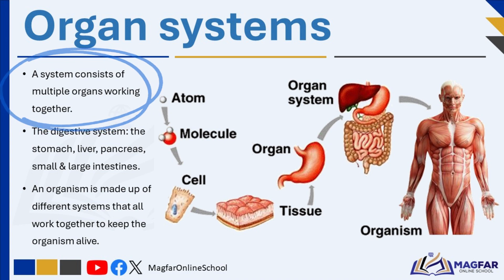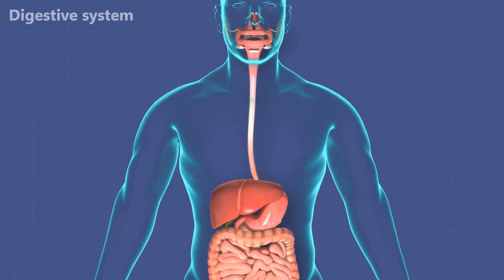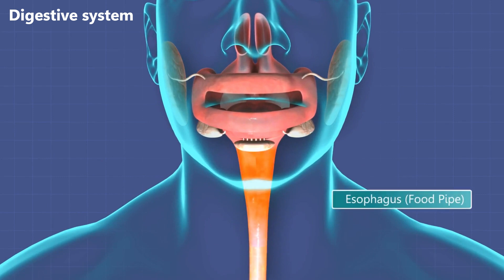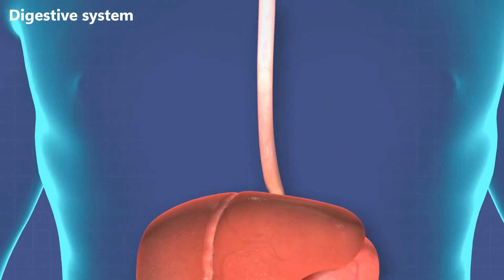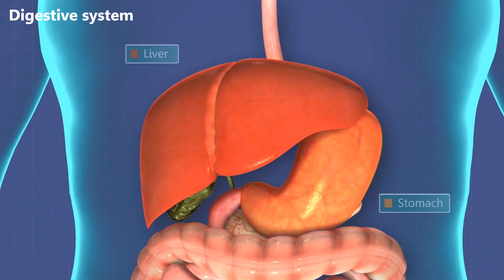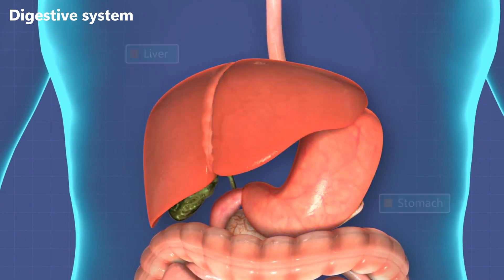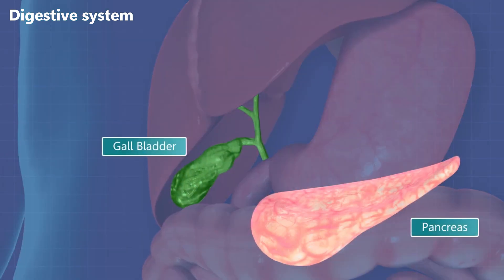For example, the digestive system includes organs such as the stomach, liver, pancreas, small intestine, and large intestine, all working together to digest and absorb food. An organism is made up of multiple organ systems that function together to maintain life.